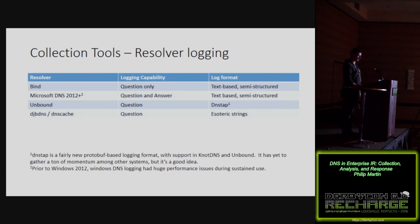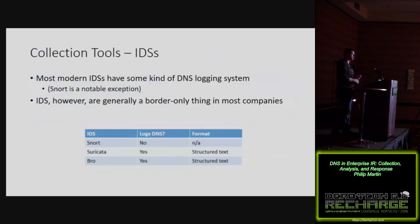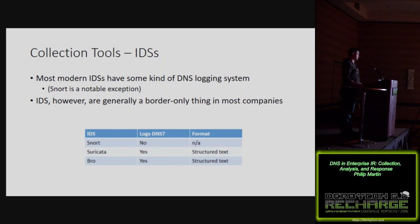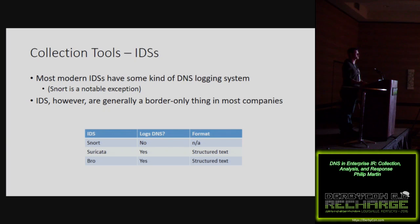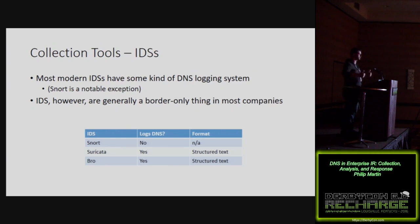Your second option is IDS. Suricata and Bro both do DNS protocol interpretation and log queries and responses, which is great if you already have that deployed. I'd use this on your border — you're probably already collecting this data and can hook it into existing transport mechanisms. For adding this from scratch, I'd personally encourage you to use Bro, because it handles not just DNS but many protocols very well.